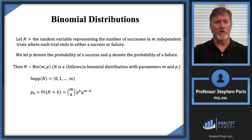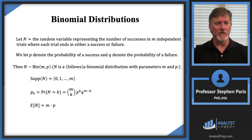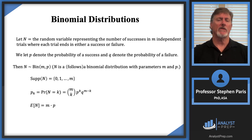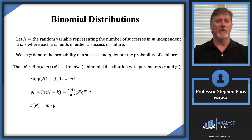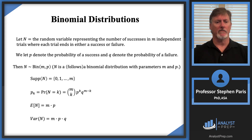The expected value of Cap N is M times P — intuitively, if you have M trials each with probability P of success, the expected number of successes is M times P. The variance of Cap N is M times P times Q.